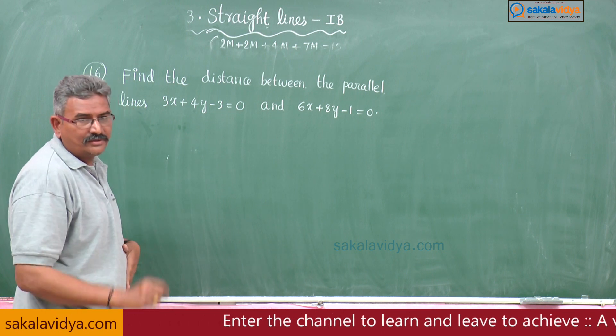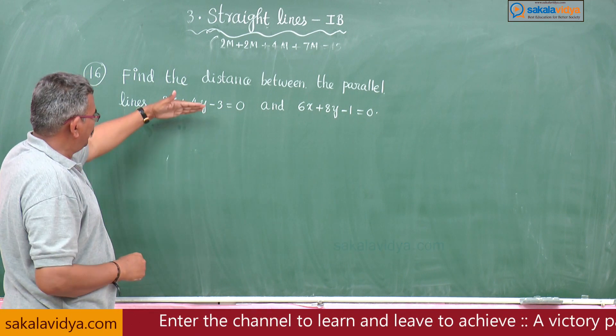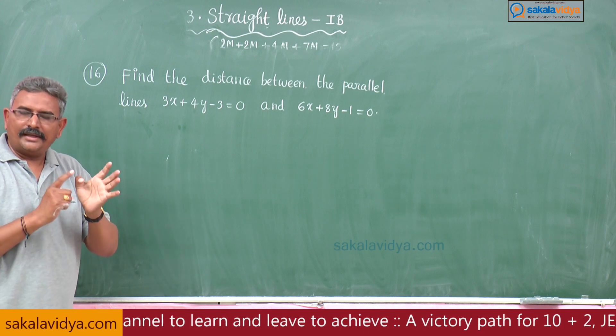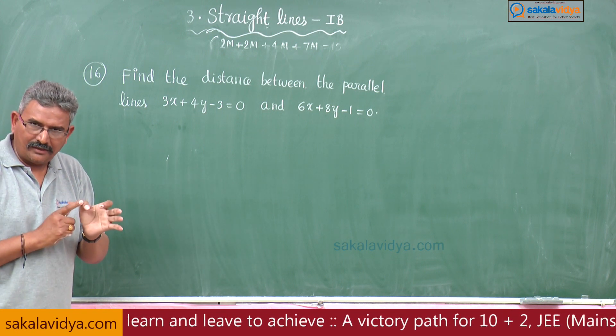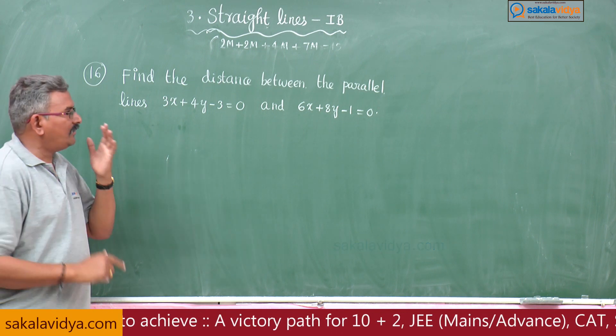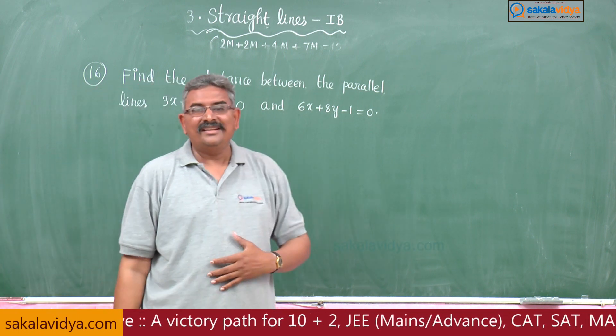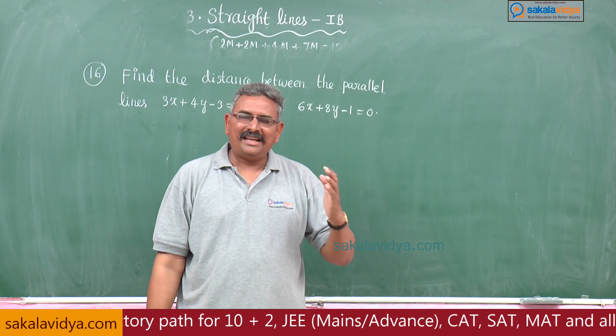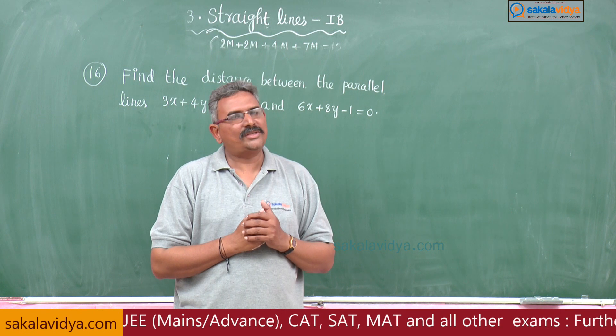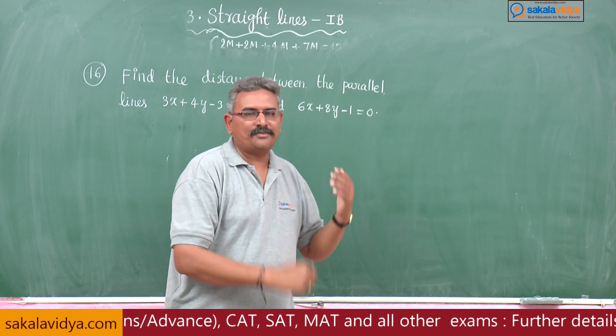Multiply the first equation by 2 on both sides to get equations 1 and 2. From this, find the a value, b value, c1 value, c2 value, then apply the formula. The distance between parallel lines is modulus of c2 minus c1 by root of a square plus b square. Let us proceed with this problem.